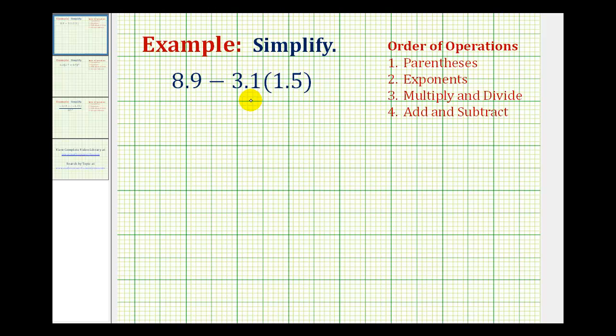We want to simplify the following expression. So we have subtraction here and we have multiplication. Using the order of operations, we need to determine the product before we subtract. So we'll determine this product here first.